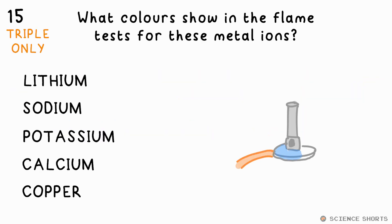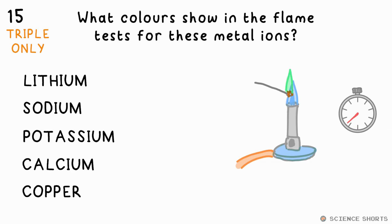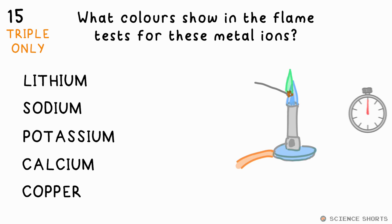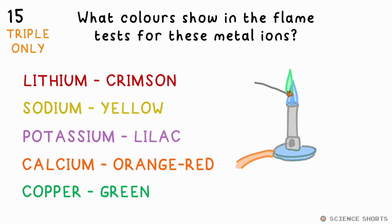Question 15. What colours do you get for the flame tests done with these five metals? Lithium gives a crimson flame, sodium yellow, potassium lilac, calcium orange-red, and copper green.